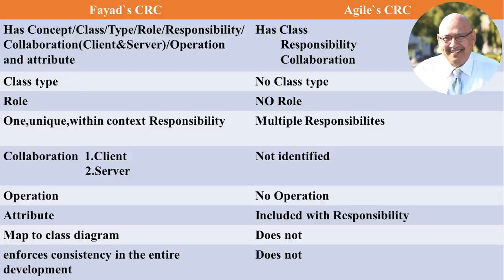Fifth difference: collaboration in the Friyad CRC card has client and server roles. Agile CRC cards don't have that. Sixth: we have operations in the Friyad CRC card, which are not defined in Agile CRC cards. Seventh: we have attributes, which in some cases are included with responsibility in Agile, but not in most cases. Attributes are actually part of the class and must be there.